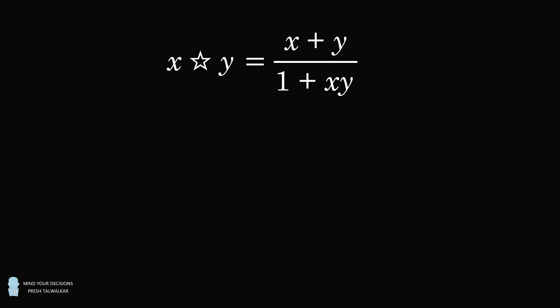Evaluate the following. First evaluate 2 star 3, take the result star 4, take the result star 5, and so on, and the pattern continues until the final operation which is the result star 2021.